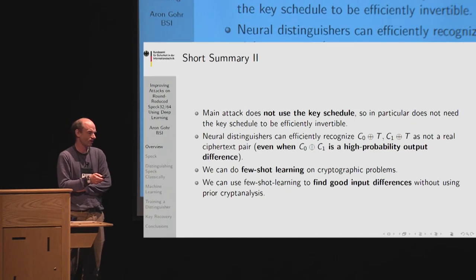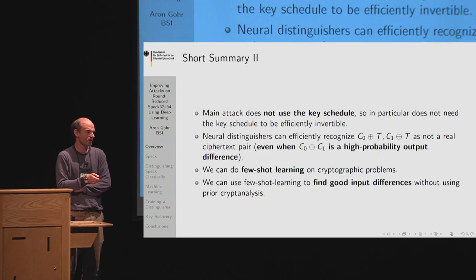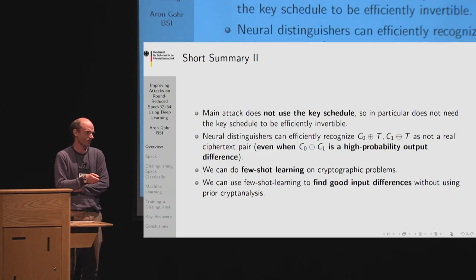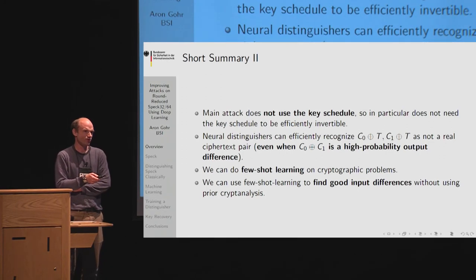The neural distinguishers can also efficiently recognize ciphertext pairs with randomized output. If you take a pair of 32-bit values corresponding to a high-likelihood output difference, it's not necessarily a pair that would appear with high likelihood in the output distribution — and the neural distinguishers can recognize that, unlike traditional differential distinguishers. We show one example of a ciphertext pair that gets an almost-zero neural distinguisher score but belongs to a 2^{-26} likelihood output difference, and in fact has zero chance of being an actual output pair — it is an impossible output pair.